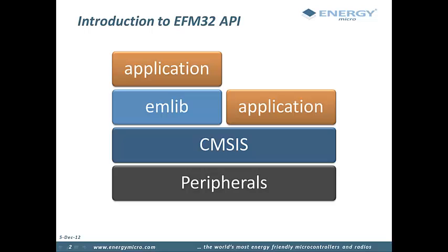The EFM32 API has two layers. The lowest layer is called CMSIS and is a direct mapping to the peripheral registers. CMSIS stands for Cortex Microcontroller Software Interface Standard and is a vendor-independent standard defined by ARM. On top of CMSIS, Silicon Labs has built a peripheral library which we call EMlib. EMlib provides a higher level of abstraction and a simpler application interface. A developer is free to choose either one of these interfaces or even mix and match between the two.